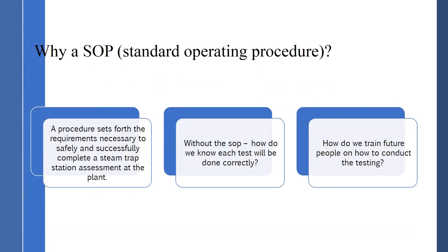A procedure sets forth the requirements necessary to safely and successfully complete a steam trap station assessment at the plant. The procedure ensures that people can go out, conduct a steam trap testing assessment, and have it be repeatable and accurate every time. Without an SOP, how do we know each test will be done correctly? We can't just assume the person knows what they're doing. Without that, we will not get repeatability — that's the reason for an SOP.